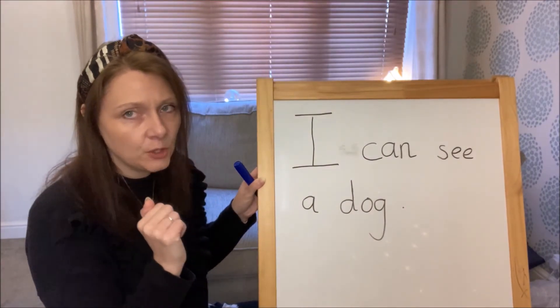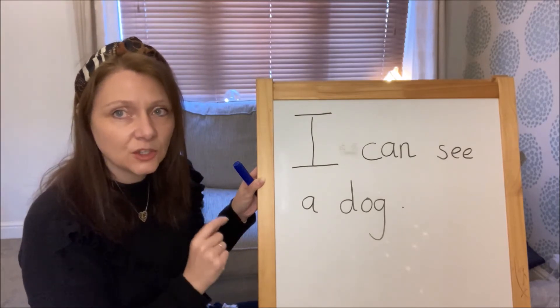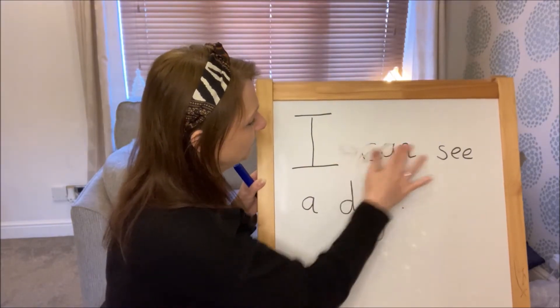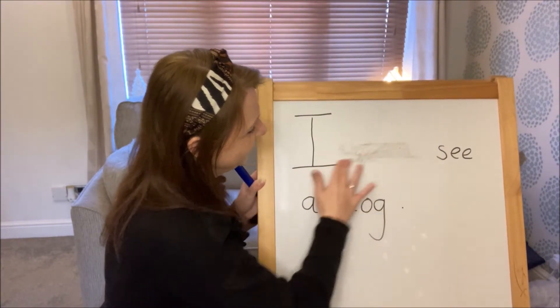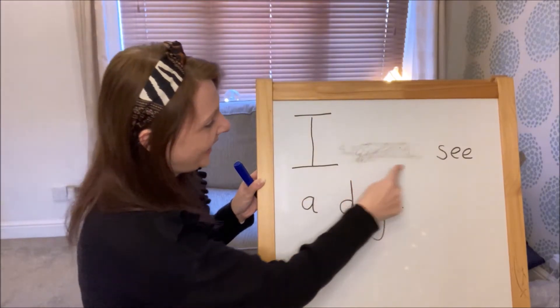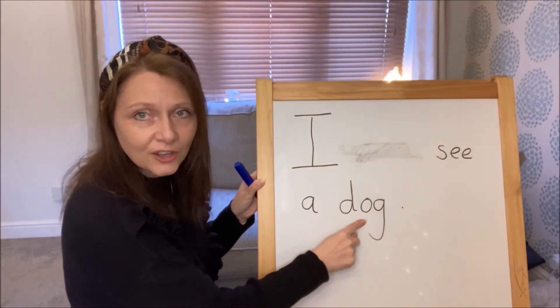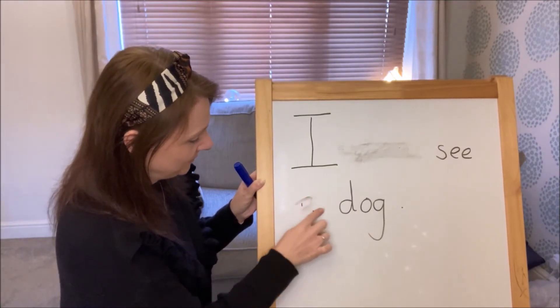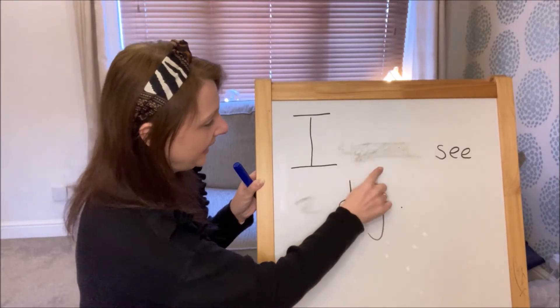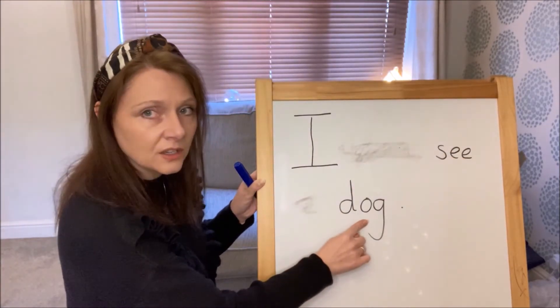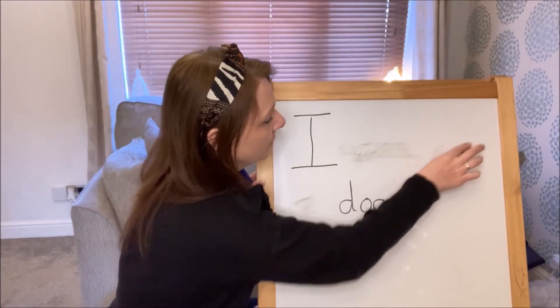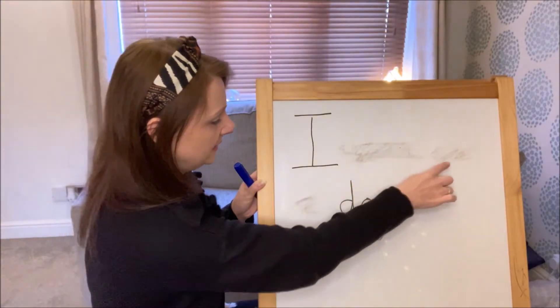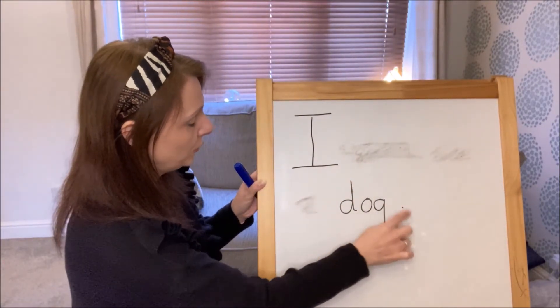I'm going to make it trickier and see if you can remember as I take certain words away. I'm going to take this word. I can see a dog. Now I'm going to take another one. I can see a dog. Take another one. I can see a dog. Full stop.